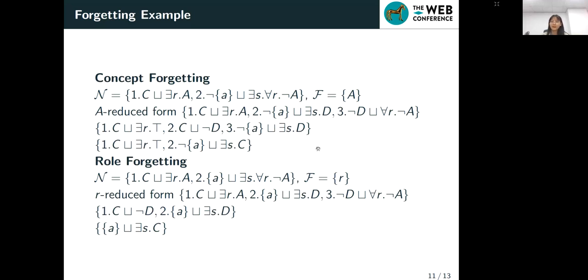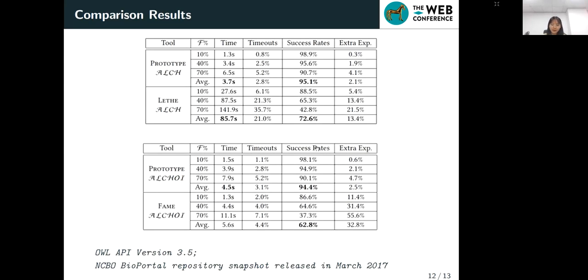And in our empirical evaluation with a prototype implementation showed superb results on a large corpus of real world ontologies taken from NCBO Bioportal. So there are mainly two results. One is that our method is fast. In more than 91% of these successful cases, the forgetting solution was computed within only a few seconds. What does the successful cases mean? It means that in these cases we can successfully eliminated all concepts and roles in the forgetting signature.